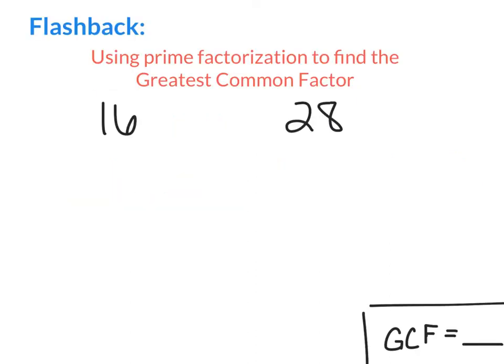We're going to take a look back at using prime factorization to find the greatest common factor, because this is the easiest way to find GCF between two numbers, and it's going to help you when you are trying to rewrite an addition or subtraction sentence using the distributive property. The first thing we are going to do is find the prime factorization of 16 and 28.